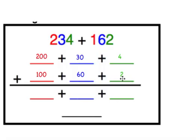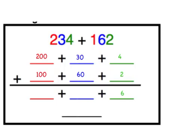We have pulled apart our numbers based on the place value of each digit, so now we have our hundreds, our tens, and our ones. We are just going to add the ones together, then the tens together, then the hundreds together. 4 plus 2 equals 6. Now the tens: 30 plus 60 equals 90. And the hundreds: 200 plus 100 equals 300.